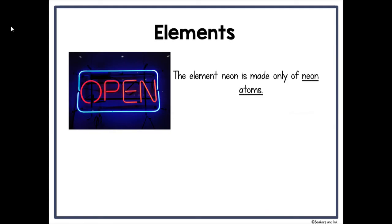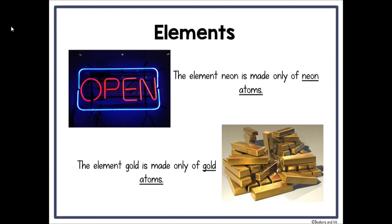The element neon is made only of neon atoms. Signs like these have different types of gases in them, one of them being neon, and they would all be neon atoms on the inside. Gold, if it's pure, is only made of gold atoms. If I just have fewer of those atoms, I have less gold. The more atoms, the more gold.